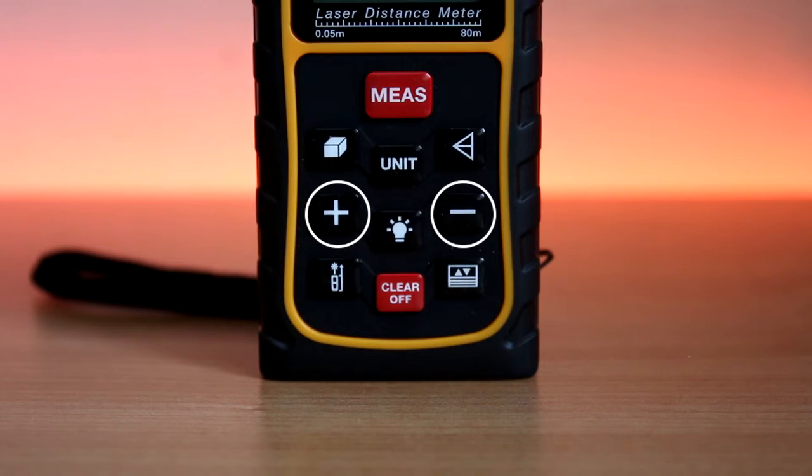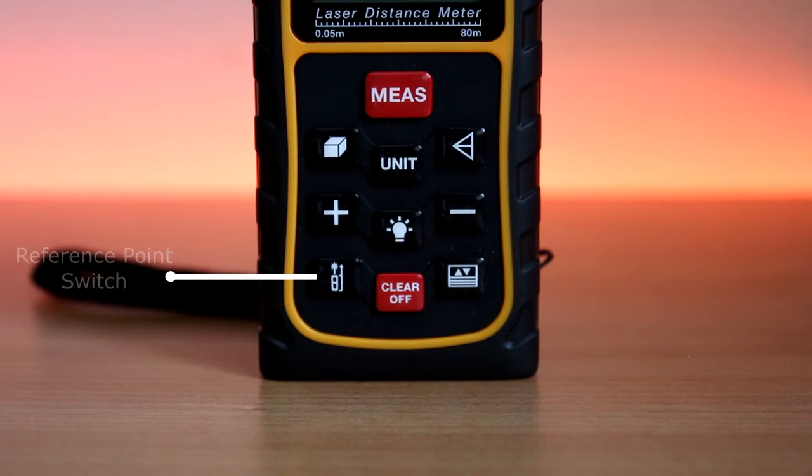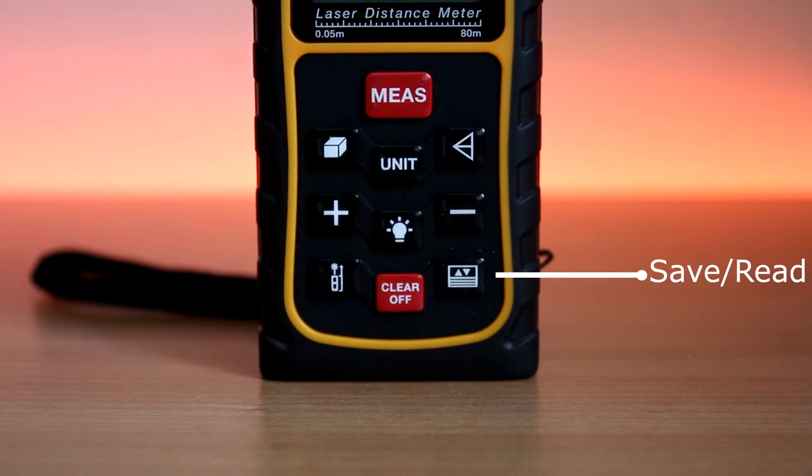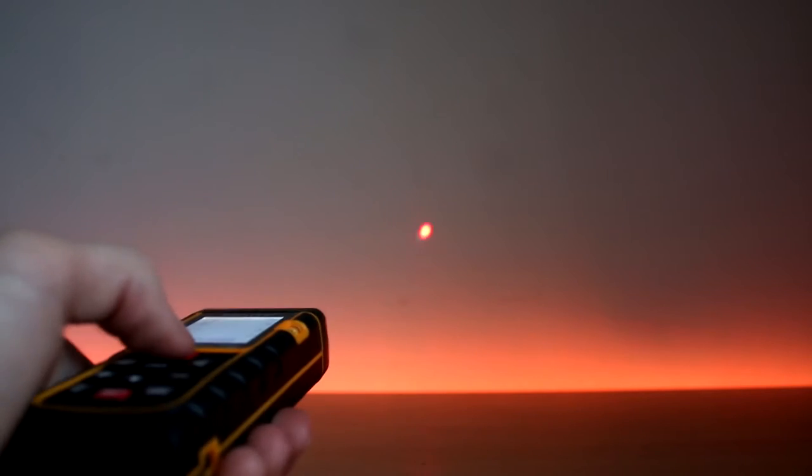You've got the plus and minus buttons, which obviously you can plus or minus the measurement from another measurement. You've got the reference point switch, the save or read switch, also the off or remove switch, and finally you've got the backlit on or off button.